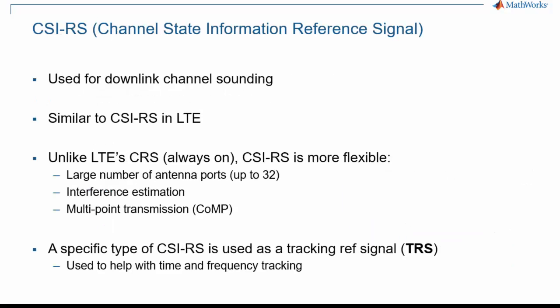CSI-RS are not a new concept in 5G NR. They have been used in LTE for this same purpose, although the detail of their specification is different in 5G NR. CSI-RS are transmitted within a bandwidth part, as anything that a UE is expected to listen to. They help with beamforming, interference estimation, as well as coordinated multipoint transmission, or CoMP.